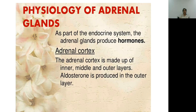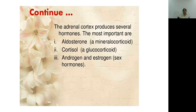The adrenal cortex has three layers, each releasing different materials. Aldosterone is released from the outer layer — the zona glomerulosa — and is a mineralocorticoid. The middle layer releases cortisol, which is a glucocorticoid. The last layer releases androgen, also called sex steroids.